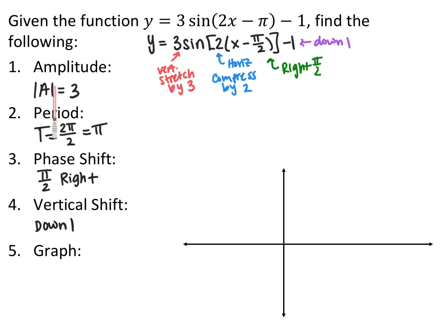The amplitude is the absolute value of the vertical stretch, so 3. The period is 2π/ω, which is 2π/2 = π. The phase shift is π/2 to the right, and the vertical shift is down 1.